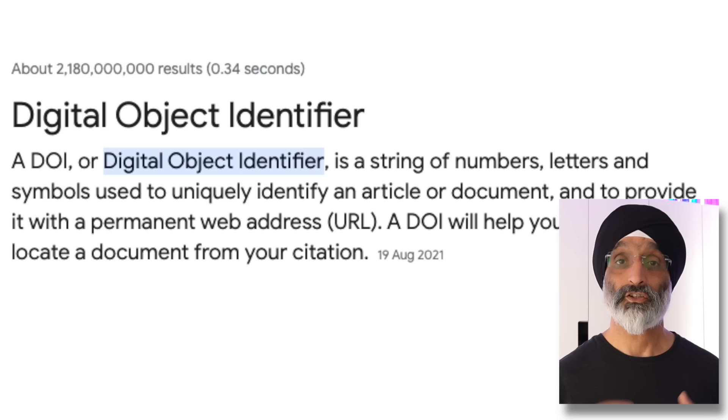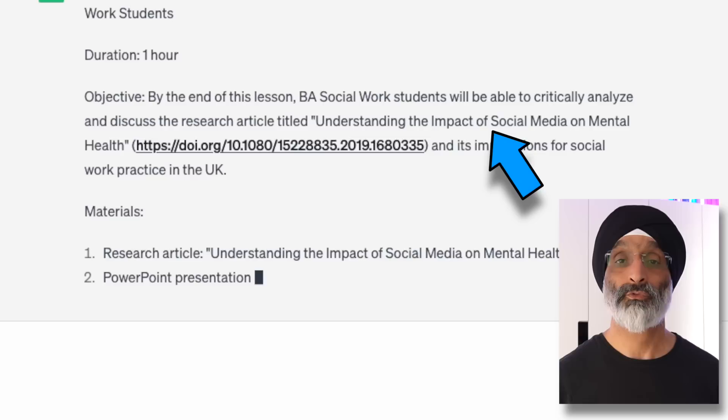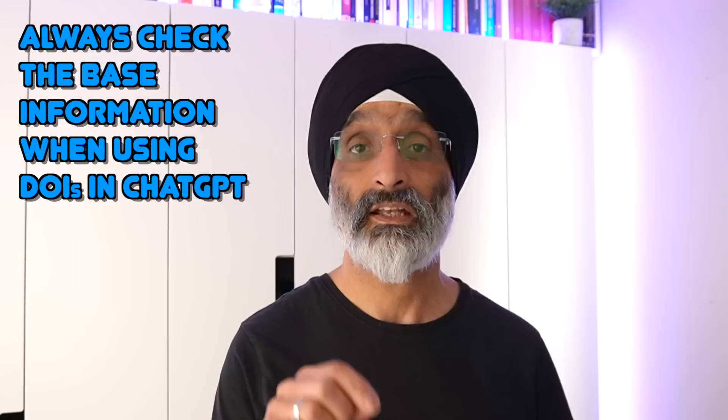I provided a digital object identifier (DOI), but when I used the DOI for my research paper it pulled the wrong article. I don't know why it pulled the wrong article, but this is an important issue to be aware of. Always check the base information when using DOIs in ChatGPT to make sure the article is correct.